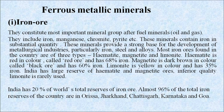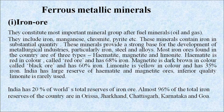First, iron ore — ferrous metallic minerals constitute the most important mineral group after fuel minerals. They include manganese, chromium, pyrite, iron, etc. These minerals contain iron in substantial quantity and provide a strong base for the development of metallurgical industries, particularly iron, steel and alloys. Most iron ore found in India is of three types: hematite, magnetite and limonite. Hematite is red in color, called red ore, and has 68% iron. Magnetite is dark brown, called black ore, and has 60% iron. Limonite is yellow in color and has 35% iron.